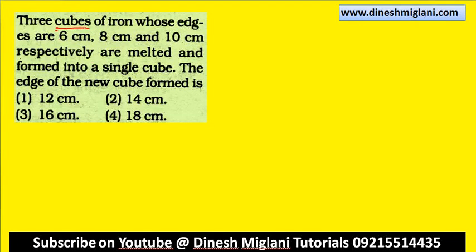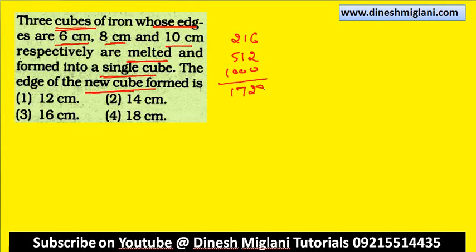Three cubes of iron with edges 6, 8, and 10 are melted and formed into a single cube. What is the edge of the new cube? We take the volumes: 6 cubed = 216, 8 cubed = 512, 10 cubed = 1000. Adding: 216 + 512 + 1000 = 1728. Edge = cube root of 1728 = 12. First one is my answer — the edge of the new cube is 12 cm.